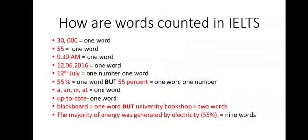Now let's discuss how words are counted in IELTS. All numbers are counted as one word — even if there are several symbols. For example, the number 30,000 is counted as one word. Time like 9:30 a.m. is also counted as one word. A date consisting of three numbers is counted as one word. But a date consisting of a number and a month will be counted as one number and one word — for example, 'the 12th of July.' If 55% is written as a symbol, it is counted as one word; but if percent is written as a word, it is counted as one word and one number.